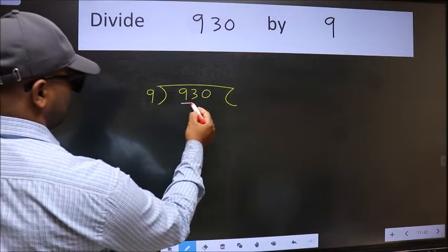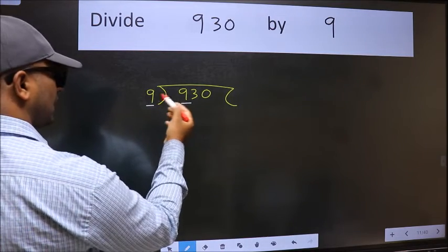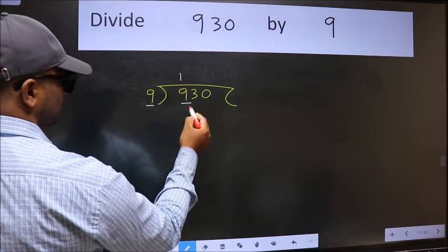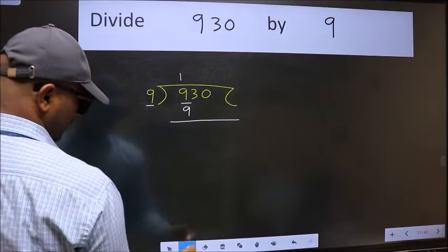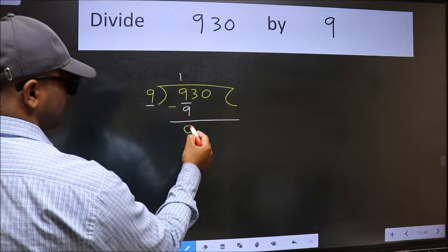Here we have 9 and here 9. When do we get 9 in the 9 table? 9 once is 9. Now we should subtract. We get 0.